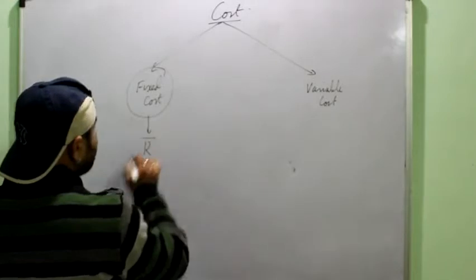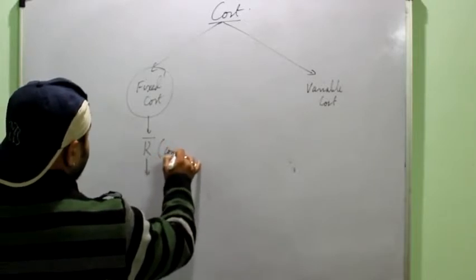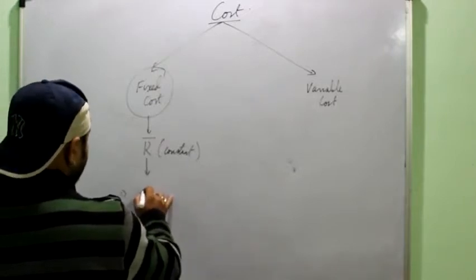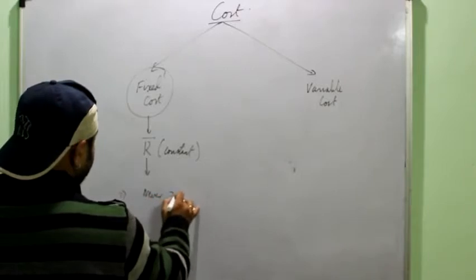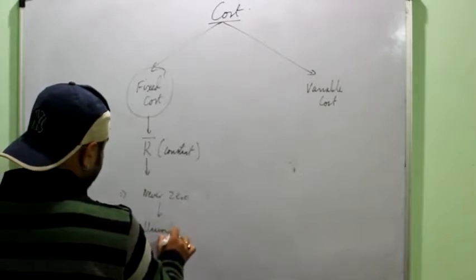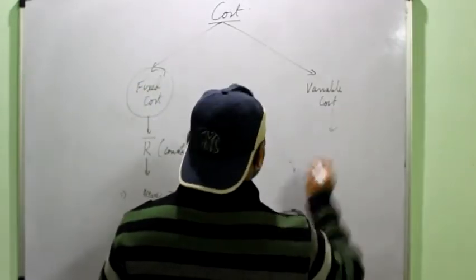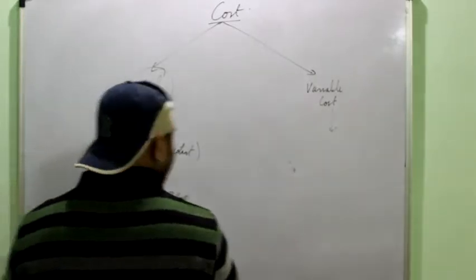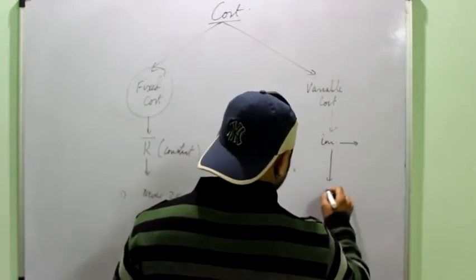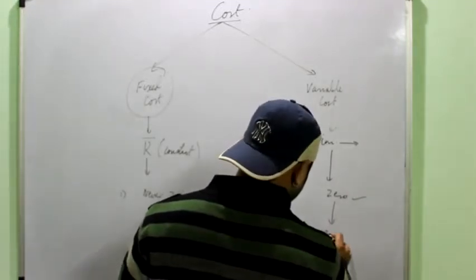It is never zero. It is also known as unavoidable cost. Variable cost increases with increase in output. Then it can be zero also. And it is avoidable cost.